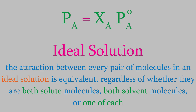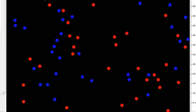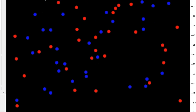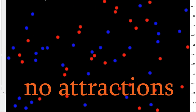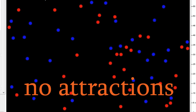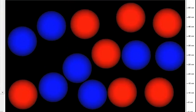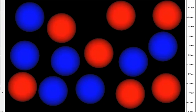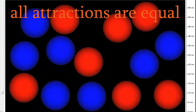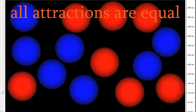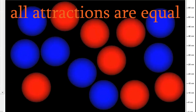In an ideal solution, the attraction between each pair of molecules is equal. In other words, two solute molecules attract each other just as much as two solvent molecules, or one of each type. This is similar to the way that an ideal gas behaves. In an ideal gas, the attractions between each of the molecules is assumed to be zero. So just as in an ideal solution, every pair of molecules attracts each other by the same amount. However, in a solution, the molecules are much closer to each other than they are in a gas, so the attractions between the molecules isn't zero. But just as with ideal gases, ideal solutions aren't always an accurate model of reality.